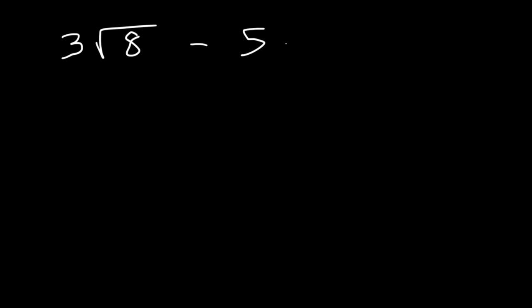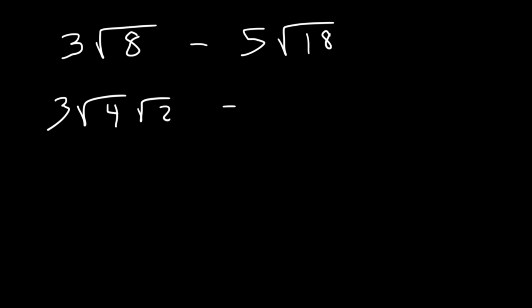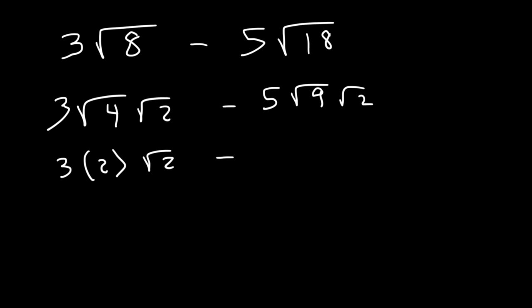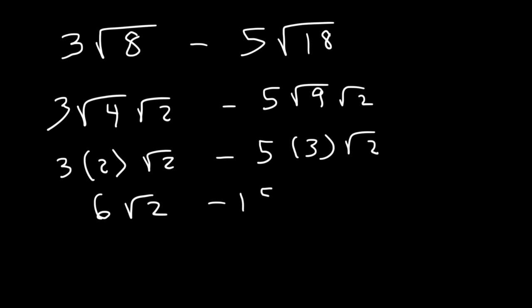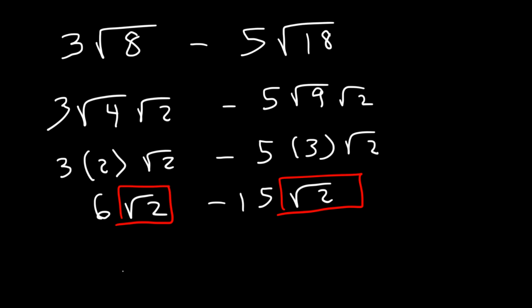What about 3 times the square root of 8 minus 5 times the square root of 18? Right now we cannot combine them because 8 and 18 are not the same. But we can simplify the radicals: 8 is 4 times 2, and 18 is 9 times 2. The square root of 4 is 2 and the square root of 9 is 3. So 3 times 2 is 6, and 5 times 3 is 15. Now we have like terms, and 6 minus 15 is negative 9. The final answer is negative 9 root 2.